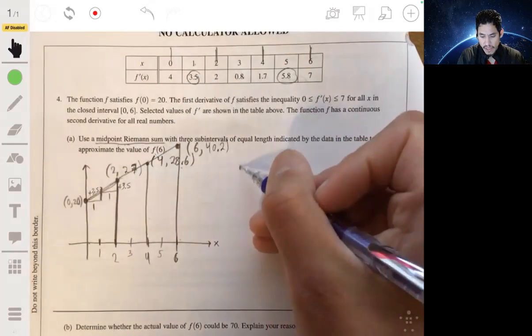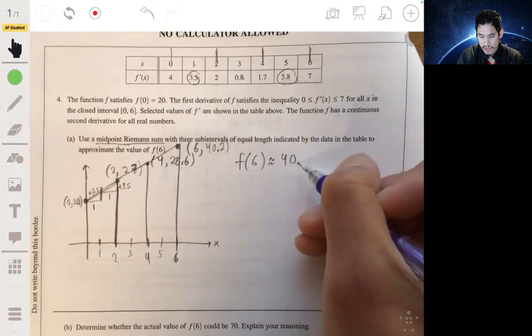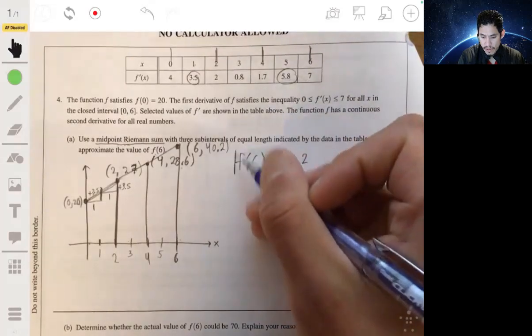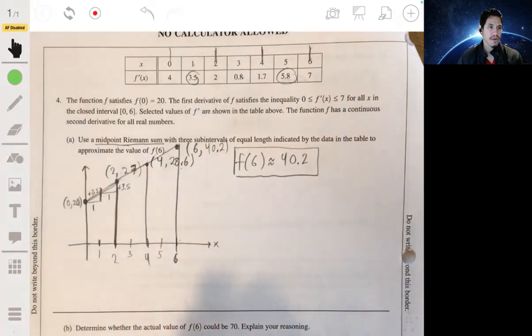So based on this, our approximation of f of 6 would be about 40.2. Now, you don't have to actually draw this out like that. I just did that to kind of show you.